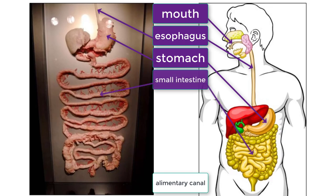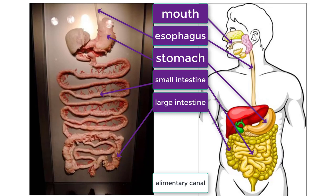After your stomach, the nutrients get pushed through the small intestine. Specific types of food continue to be broken down in the small intestine, but the main function of the small intestine is to absorb nutrients. After the small intestine, remaining contents get pushed to the large intestine where water and dissolved minerals are absorbed. Any remaining waste is collected and exits through the anus.